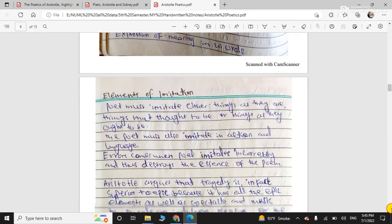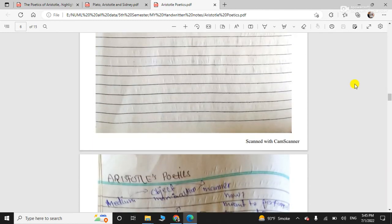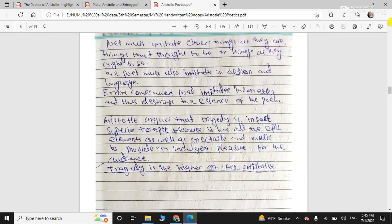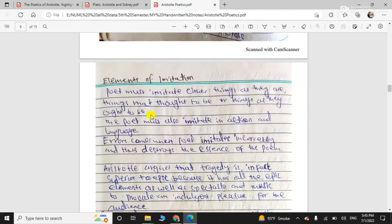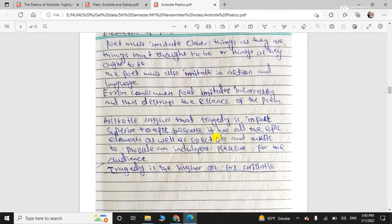So, elements of imitation he discusses. Elements of imitation, he says that poet must imitate either things as they are or the things they thought to be. And poet must also imitate actions and language. Diction we talked about. And tragic flaw, error. And he argues that tragedy is in fact superior to epic. Why? Because it has all the epic elements. And tragedy is the higher art for Aristotle.